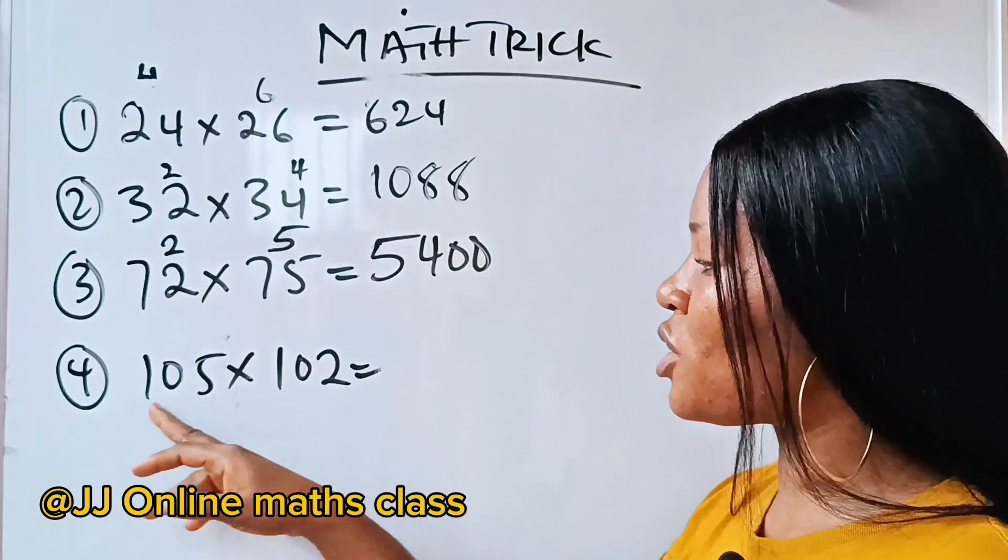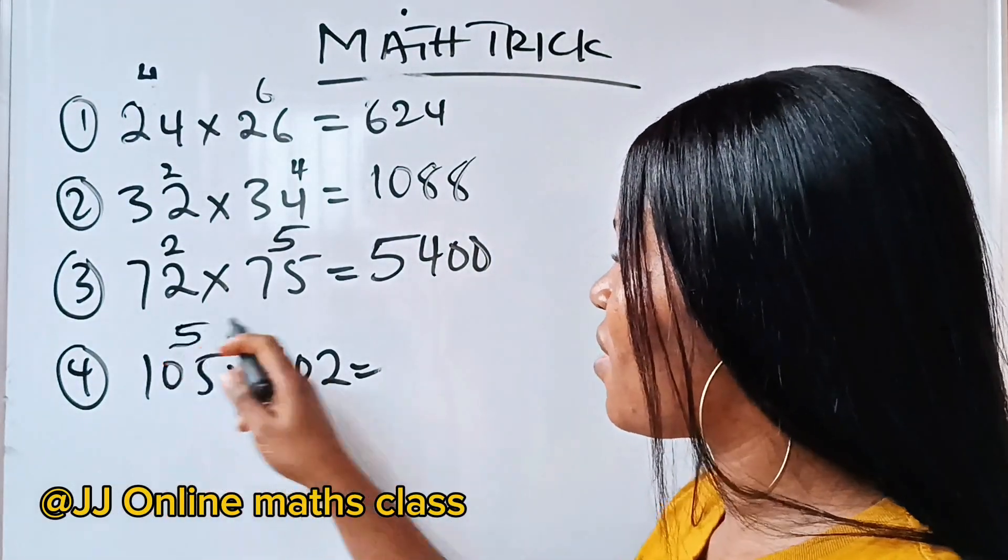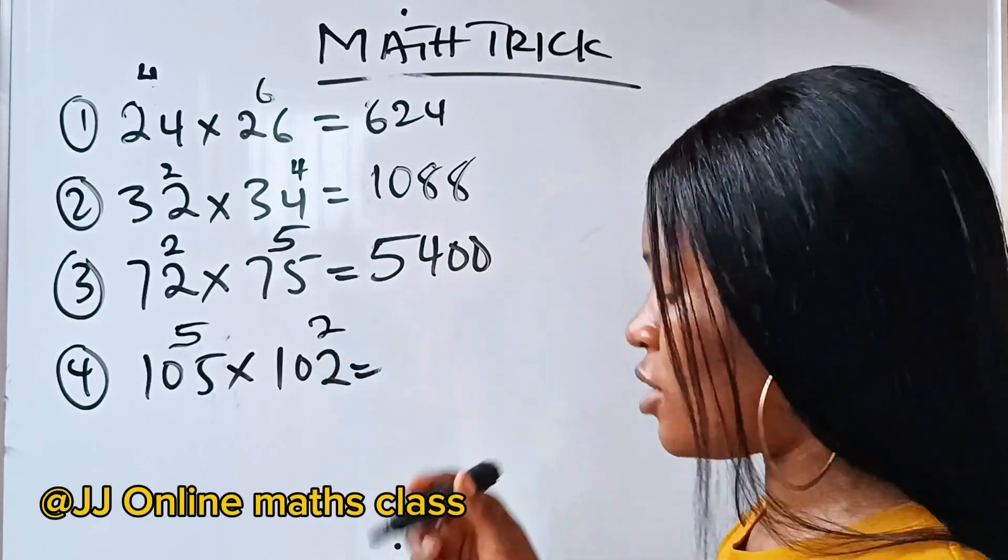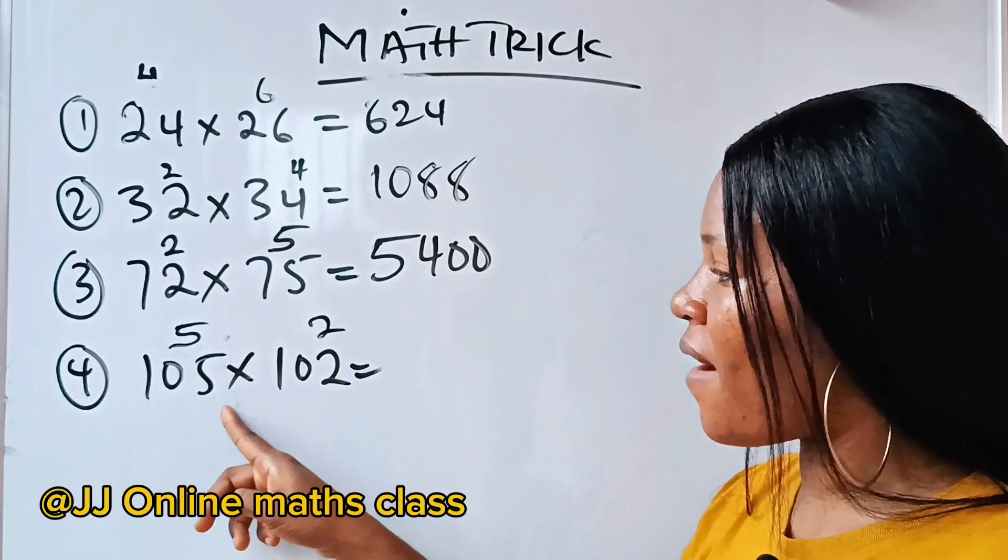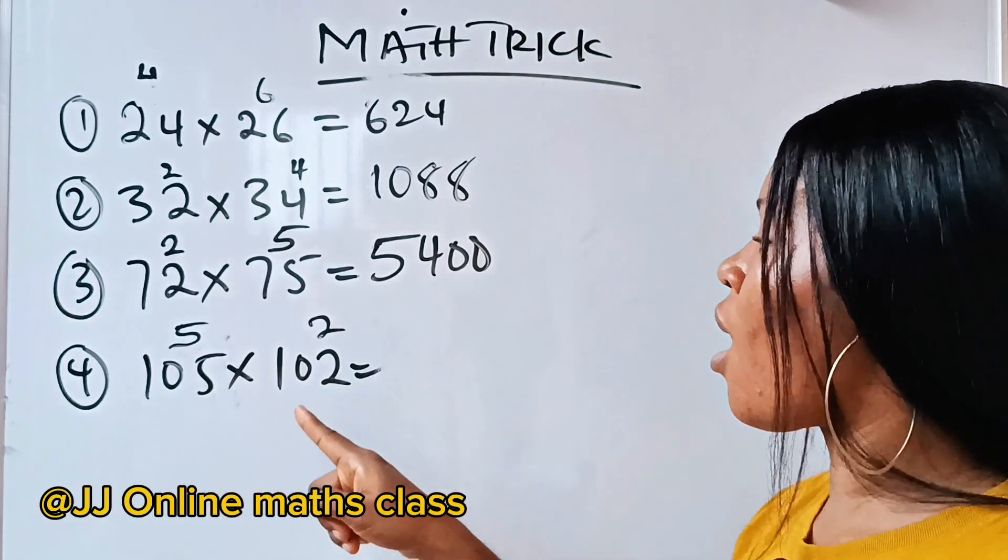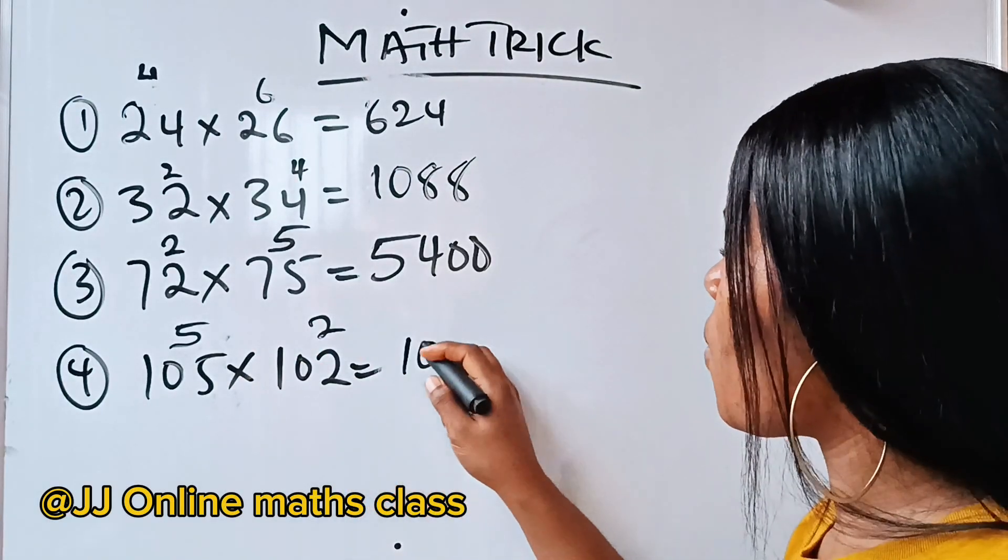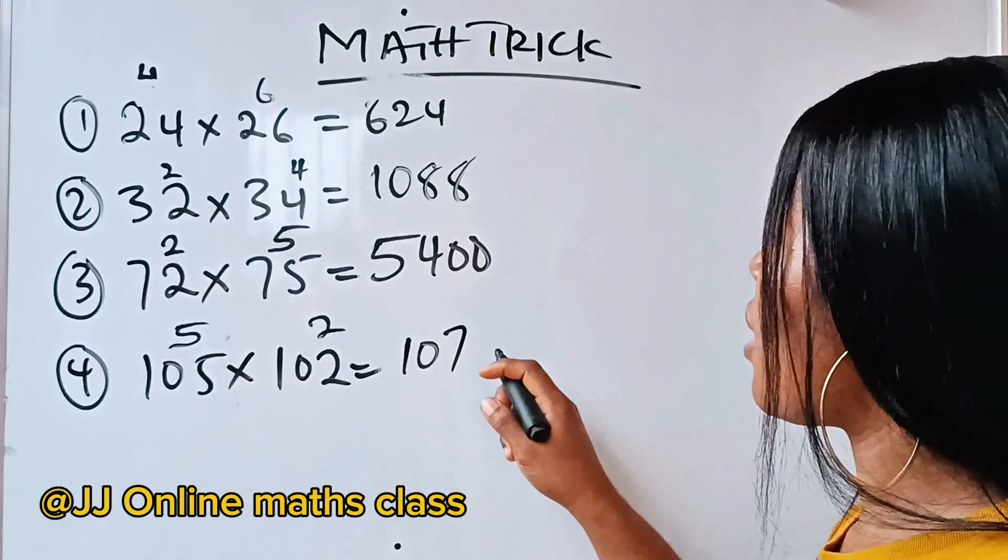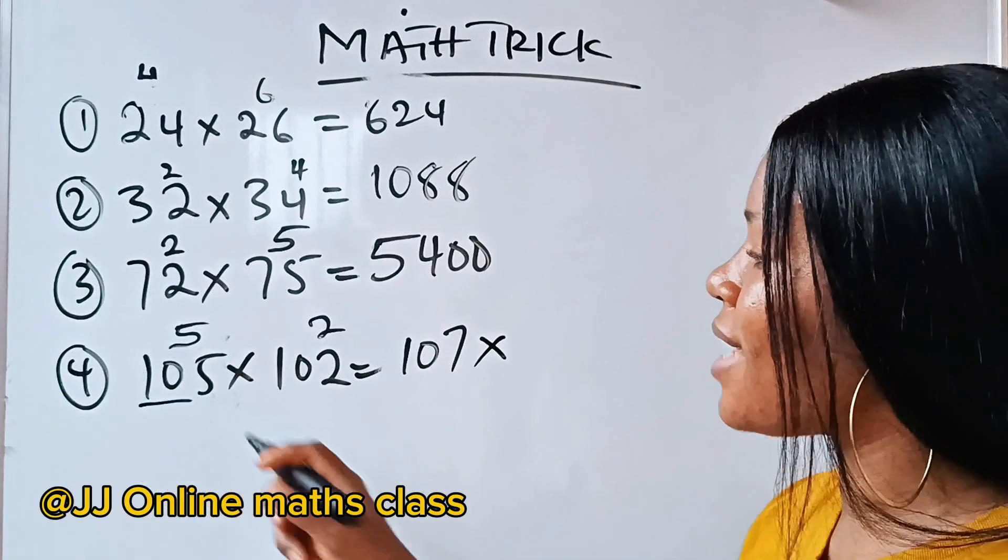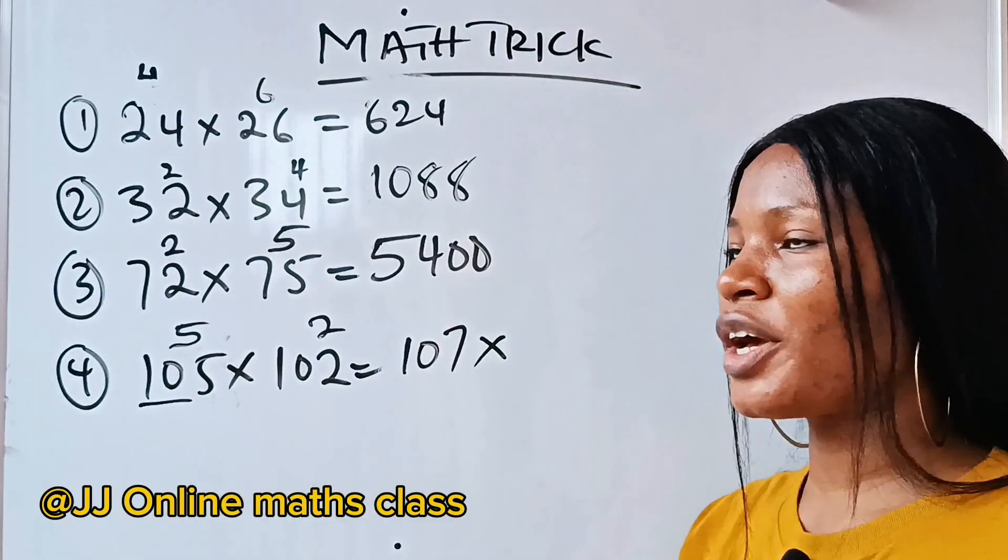Then, for this, the extra we have here is 5. The extra we have here is 2. Now, 105 plus 2, or 102 plus 5, will give us 107. Then, we are going to multiply it by 10. Recall,